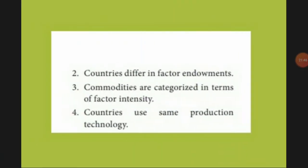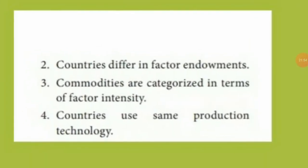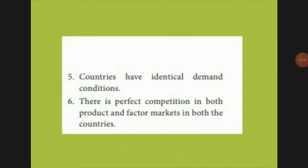Assumptions of the Heckscher-Ohlin theory: first, there are two countries and two factors. Second, countries differ in factor endowment — capital or labor. Third, commodities are categorized in terms of factor intensity. Fourth, countries use the same production technology — technology should not be changed. Fifth, countries have identical demand patterns between countries. Sixth, there should be perfect competition in both the product market and the factor market in both countries.